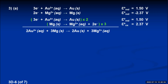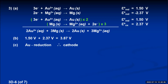To get the voltage, add the reduction and oxidation potentials together to get 3.87 volts for this galvanic cell. Part C: which metal is the anode and which is the cathode? Gold is being reduced, and reduction occurs at the cathode, so gold is the cathode. The magnesium reaction is the oxidation, so because magnesium is being oxidized, the piece of magnesium metal is the anode.